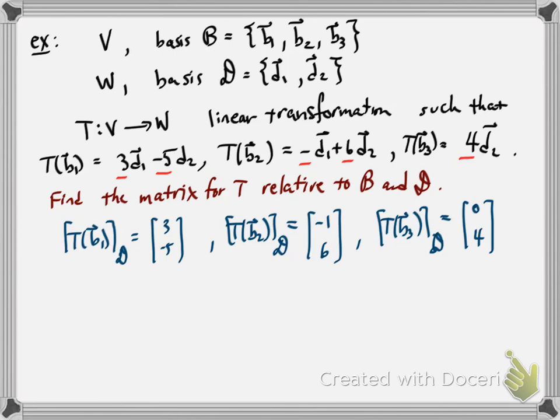The D coordinate vector of T of B3 is (0, 4). From the previous result, to compute the matrix for T relative to B and D, I just stack these vectors together as the columns of the matrix. So the matrix for T relative to B and D is: [3, −1, 0; −5, 6, 4].